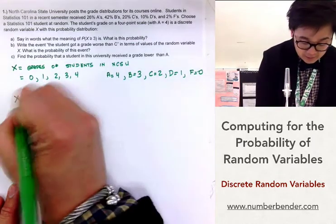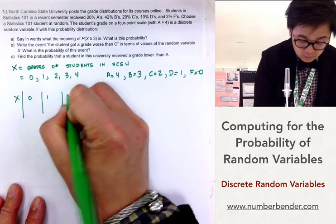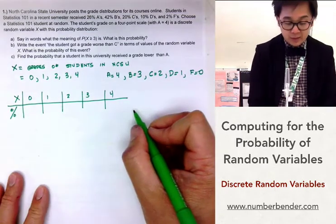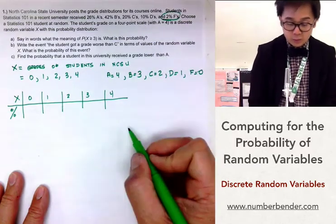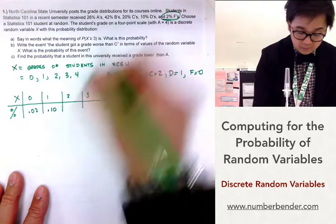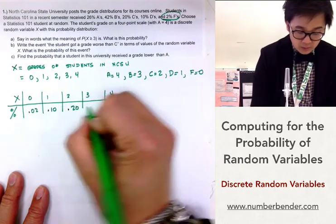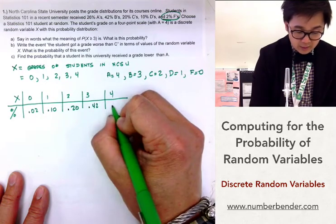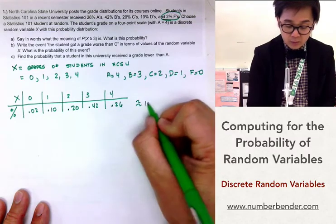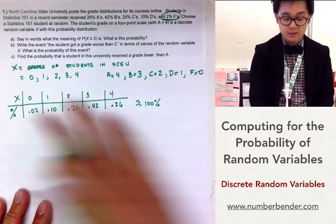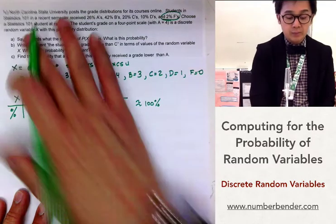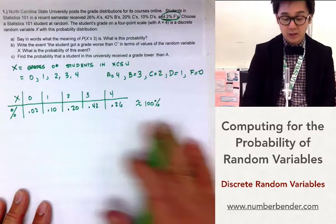If we draw a table based on the information given, we have x as 0, 1, 2, 3, and 4, and the percentages for the grade distribution. Getting a 0 is 2%, a 1 is 10%, a 2 is 20%, a 3 is 42%, and A is 26%. We know this is a legitimate probability model because when we add all these up, it equals 100%. Now that we have our probability distribution table, we can answer A, B, and C a lot more easily.